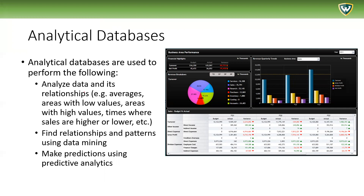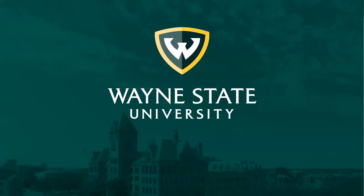Analytical databases are used to analyze data and its relationships — understanding averages, sales, areas with low or high values, times or dates where sales are higher, customers who purchase frequently or less often, regions of the country with certain operations, and so on. They are used to find relationships and patterns using data mining or other analytics, and you can use that to make predictions or learn about your data. That's it for this one — see you next time.